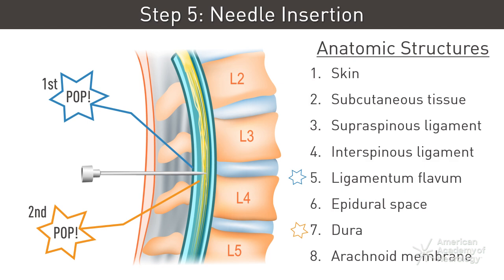Needle advancement should be slow so you can feel for two pops, with the second pop typically indicating that you have crossed the dura. When you feel the second pop, withdraw the stylet fully and watch for a few seconds to look for CSF return.